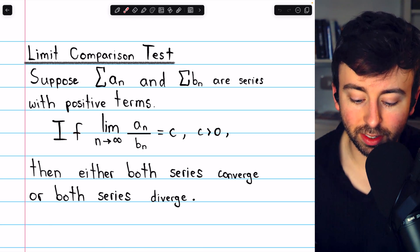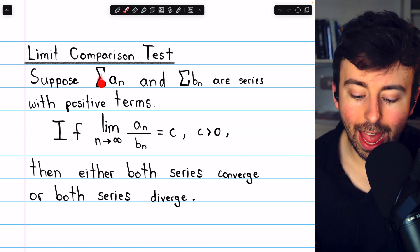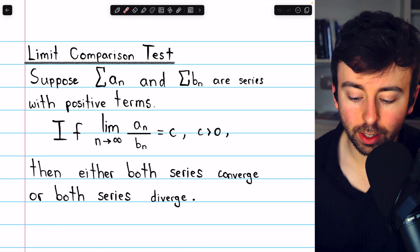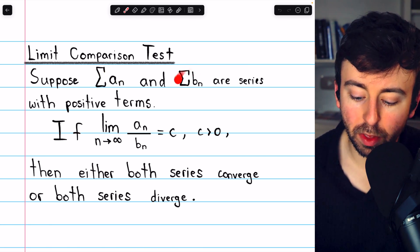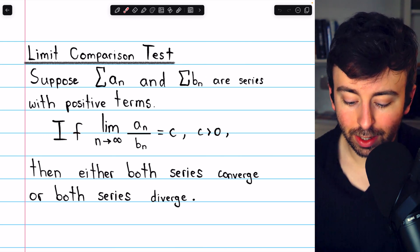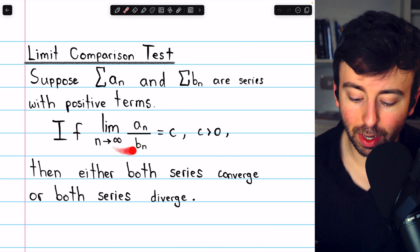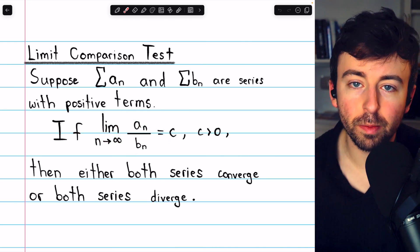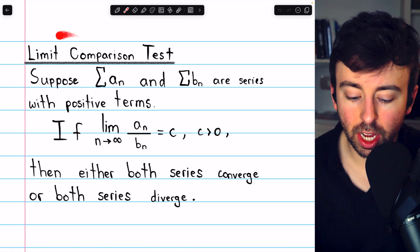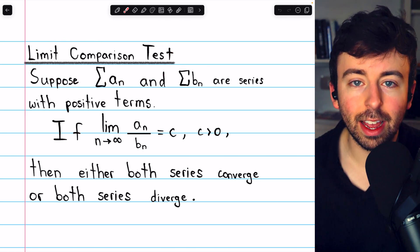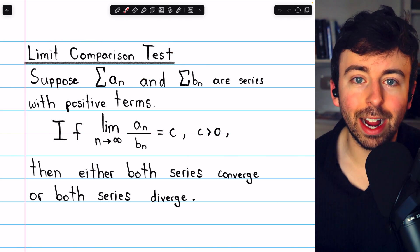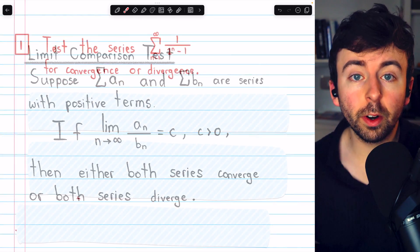If, for example, the sum of the a_n's was divergent but the sum of the b_n's was convergent, there's no way the limit of their ratios could approach a finite number. Let's go ahead and practice applying it.